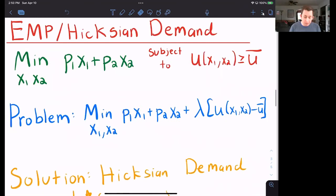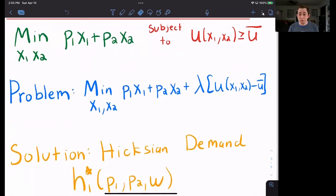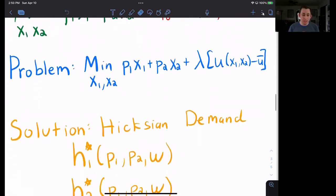And then we tried to use the Hicksian demand or the expenditure minimization problem example, where we had this minimization problem that we've seen before, and the solution was Hicksian demand.